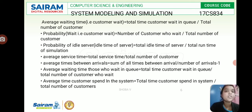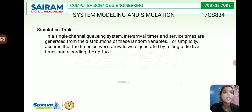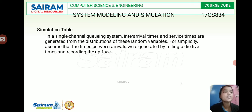Average waiting time for those who wait equals total time customers wait in a queue divided by the total number of customers who wait. Average time customers spend in the system equals total time customers spend divided by total number of customers. Using these formulas, we calculate waiting times, server idle time, average service time, and average inter-arrival times. In a single channel queuing system, inter-arrival time and service time are generated from probability distributions. For simplicity, we assume the time between arrivals is generated by rolling a die five times and recording the up face.